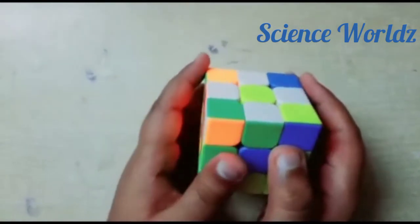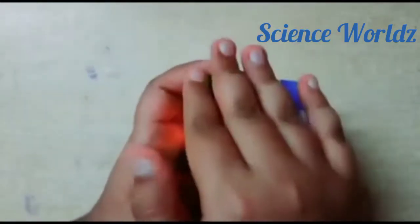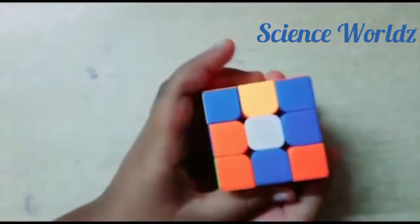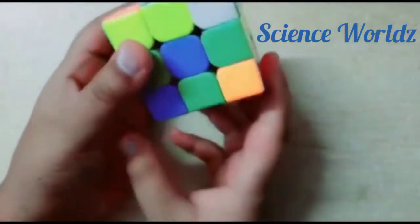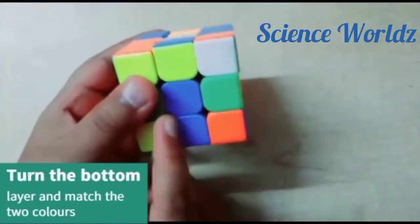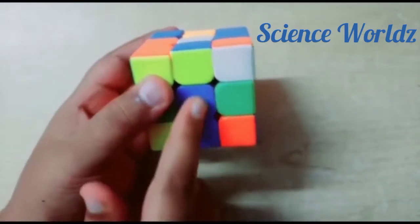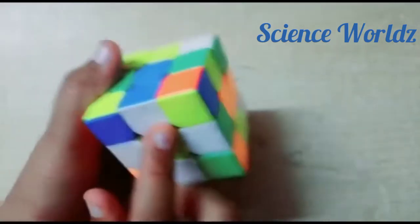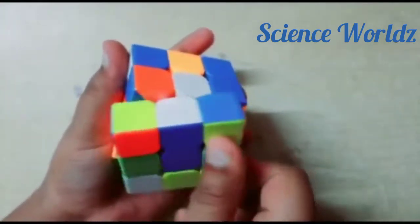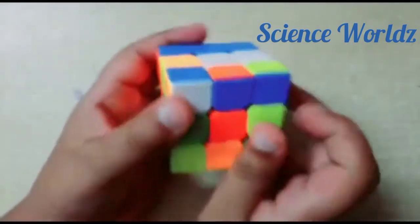So first we must keep this flower at the bottom and then by turning this bottom layer we must match these two colors. Here these two colors are blue and here it is white. So we can turn this face like this for the next color.